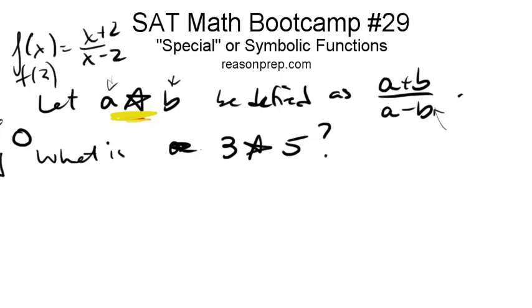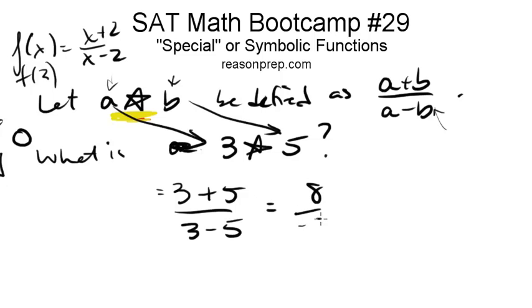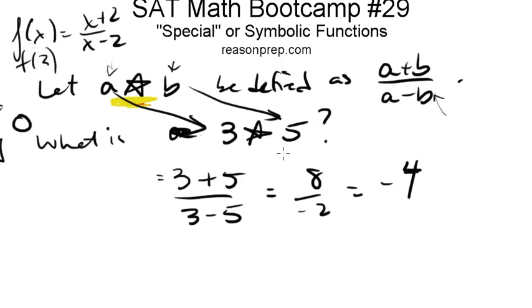So all we have to do in these cases is just match the pattern. So what would we do for this problem? Well we would say, okay, a⋆b is this, so what is 3⋆5? Let's just replace everywhere we see an a, we replace it with 3. Everywhere we see a b, we replace it with 5. So this would just be (3+5)/(3-5). This is just going to be 8/(-2), that's just -4. So even though it looks weird, it's just a functions question.